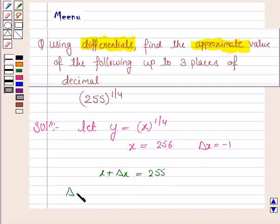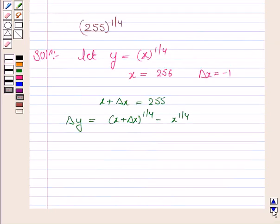And we know that delta y is equal to f of x plus delta x minus fx. So this is x plus delta x to the power 1 by 4 minus x to the power 1 by 4. So we have delta y equal to 255 to the power 1 by 4 minus 256 to the power 1 by 4.